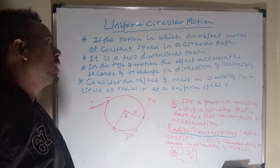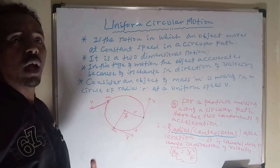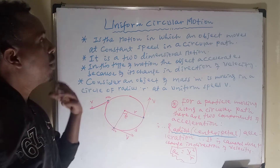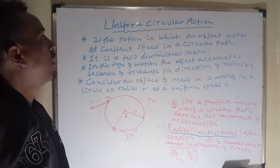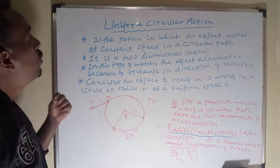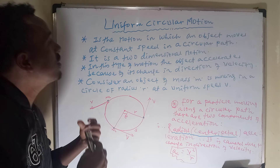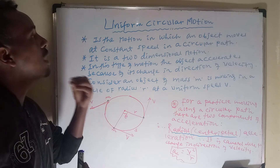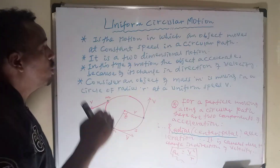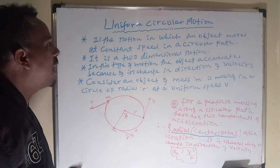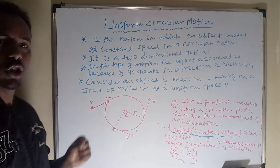Uniform circular motion is another type of two-dimensional motion. Projectile motion is also a two-dimensional motion — including inclined projection and horizontal projection. In uniform circular motion, the body follows a circular path at constant speed.